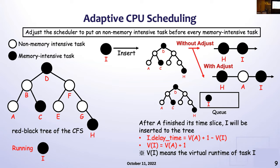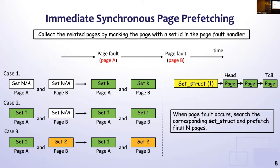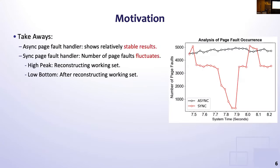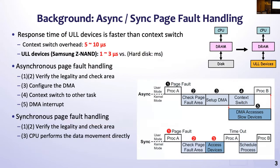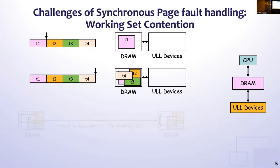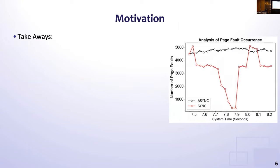A follow-up question: looking at the figure comparing synchronous and asynchronous page fault handling, the synchronous peaks are only slightly higher than the asynchronous average. The difference doesn't seem very large — could you comment on how severe the issue actually is?